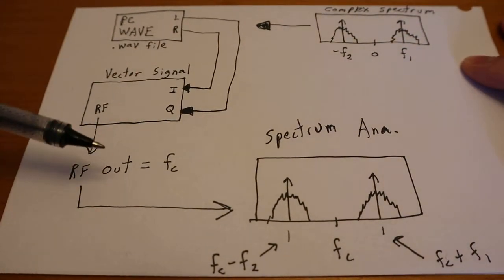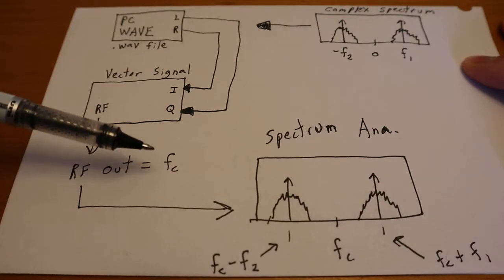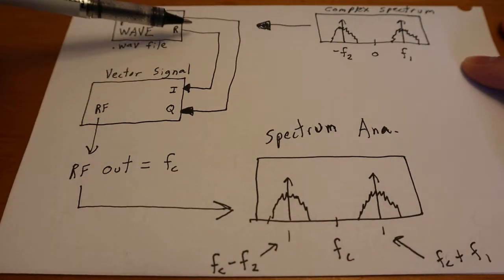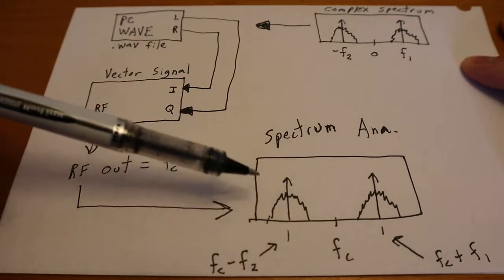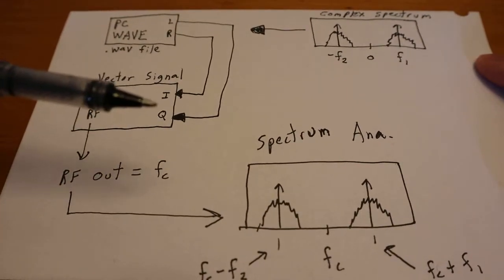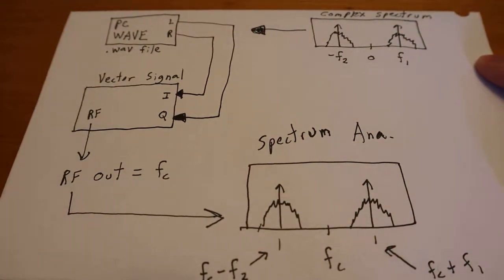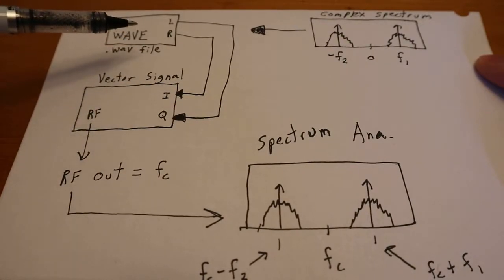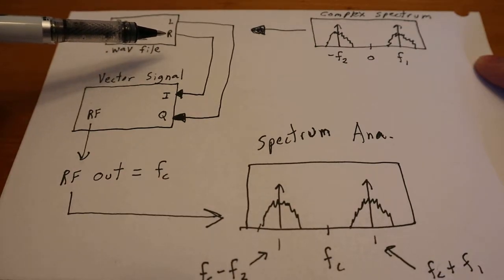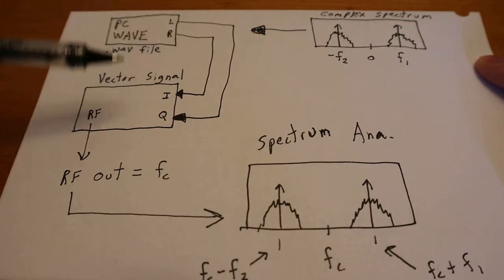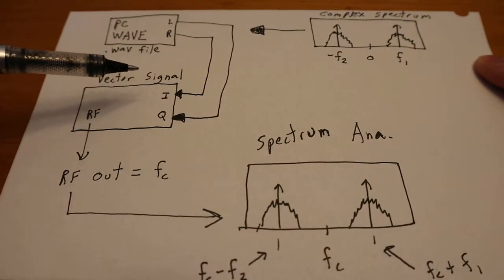So simply by tuning this FC, puts this spectrum up here anywhere we want. And that is the power of IQ modulators. So we can replace this with maybe a higher speed ARB that can generate these IQ signals, or left-right signals, with a higher sample rate.